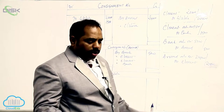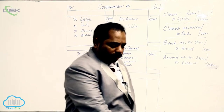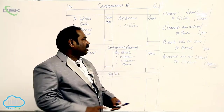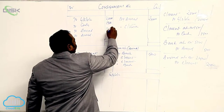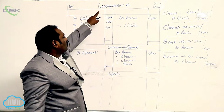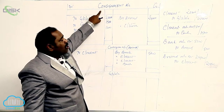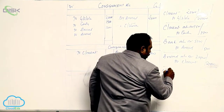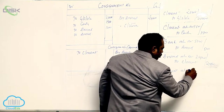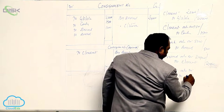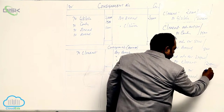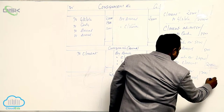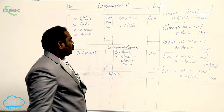Selling expenses amounted to 1,200. Whenever expenses are met by the consignee, the entry is Consignment Account debit, to Consignee Account — since we have to pay the consignee, he is a creditor to us — for 1,200.